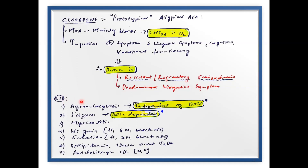Let us see the side effects of Clozapine. One important — and potentially emergency — adverse effect is agranulocytosis. This is an important MCQ point: agranulocytosis is independent of the dose because it is immune-mediated. So the dose does not determine its occurrence, making it dose-independent. Seizures, on the other hand, are dose-dependent. Another emergency condition that can arise from Clozapine therapy is myocarditis.